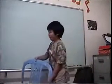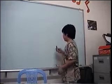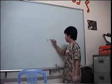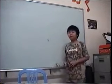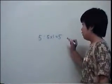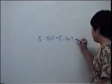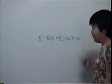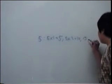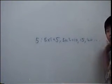First, let's have a warm-up problem. We're going to find the multiples of 5. The multiples of 5 are: 5 times 1 equals 5, 5 times 2 equals 10, and 15, and 20, and so on.